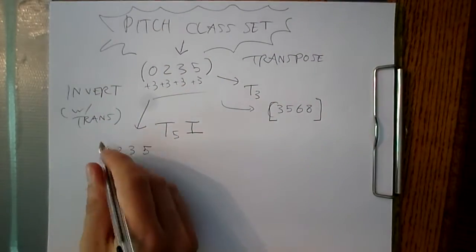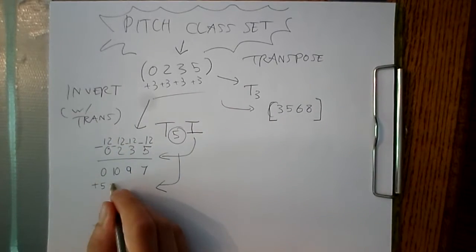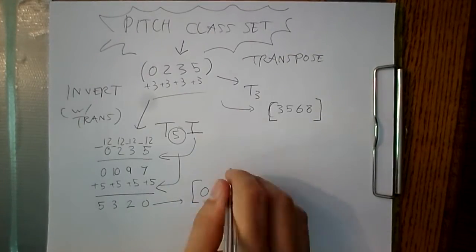And to invert, we subtract 12 from everything, or we can write the step sizes backwards, starting from any pitch class. Those are some of the easiest ideas from this theory.